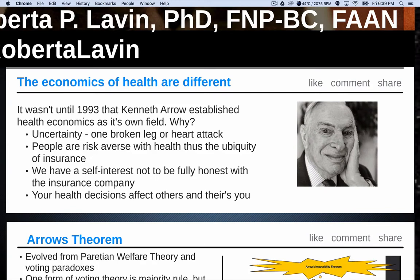Historically, we have had a self-interest that tells us to not be fully honest with our insurance companies, and sometimes even with our providers. Until the Affordable Care Act, people could be denied insurance because of pre-existing conditions, which led people to be dishonest about their health status. Your health decisions also affect other people, and other people's health decisions affect you. For example, if I choose not to get my flu shot and get the flu, I might give it to you, and likewise if you don't get your flu shot, you could give it to me.